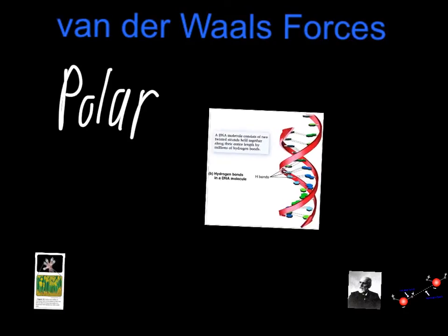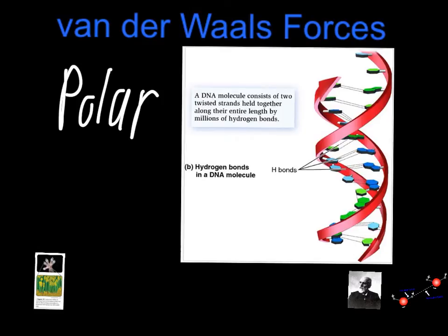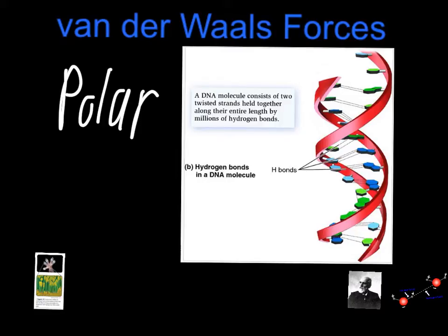Another thing we'll talk about this year that plays a major role is the formation of DNA. We'll spend two chapters on DNA — how it's copied and how it's passed on to future generations. Watson and Crick came up with the model of DNA. Its structure is called the double helix, a spiral structure. The attraction between some of the base pairs is referred to as a hydrogen bond, which helps hold together the molecular structure of DNA. Some base pairs make two hydrogen bonds and others make three.